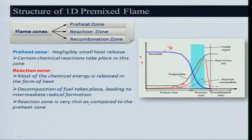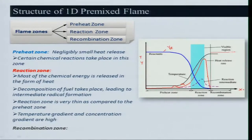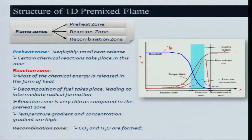The recombination zone is where temperature is almost flat — there is no change in temperature along the x direction. But in real situations, particularly for hydrocarbons, there is some recombination: CO₂ and water are formed, and some heat is released. As a result, the temperature profile will be increasing towards an asymptotic value, which I have not shown deliberately for simplification.